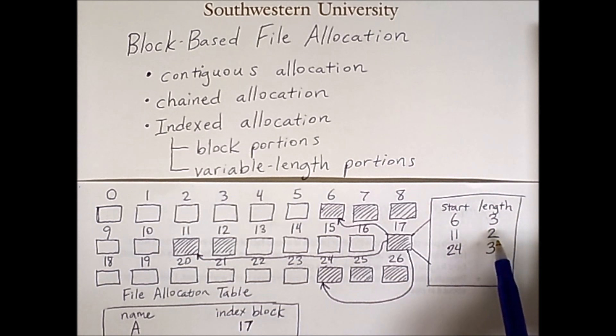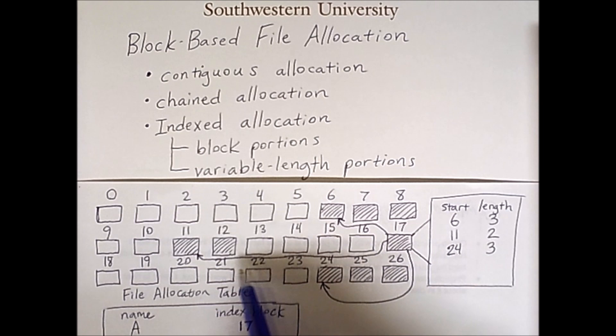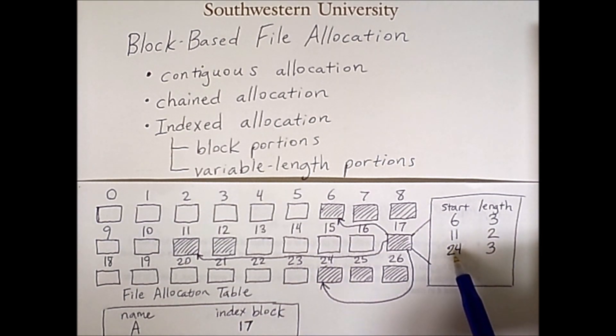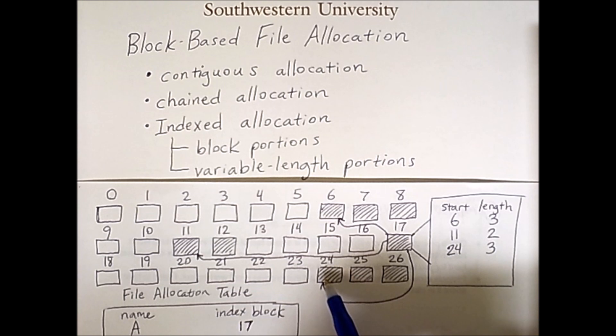The next two blocks of the file start at block 11. So there's a pointer to block 11 and then we have one two blocks associated with this file. The last three blocks start at block 24 and then we have a length of three there so we have one two three blocks that are the last part of the file.